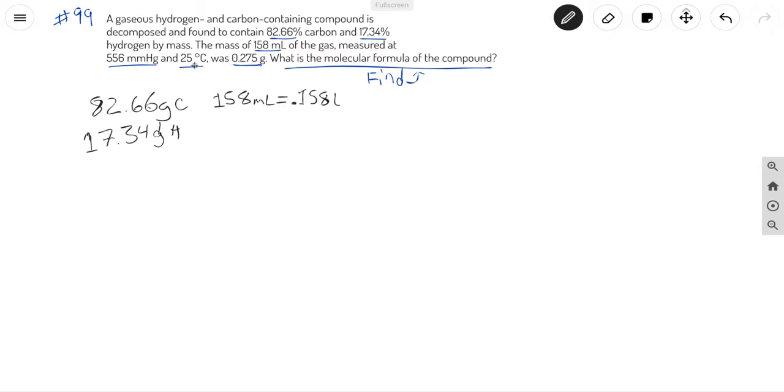And let's go ahead and convert everything else into the units that we need. So millimeters mercury we need to convert that to atm, and 25 degrees Celsius plus 273, which is a conversion factor in order to convert it to Kelvin, is going to give us 298 Kelvin.